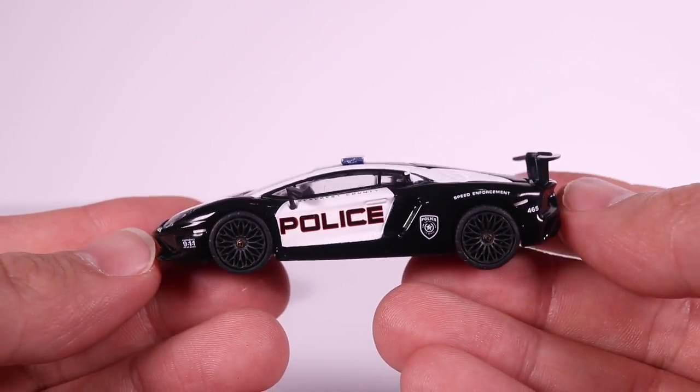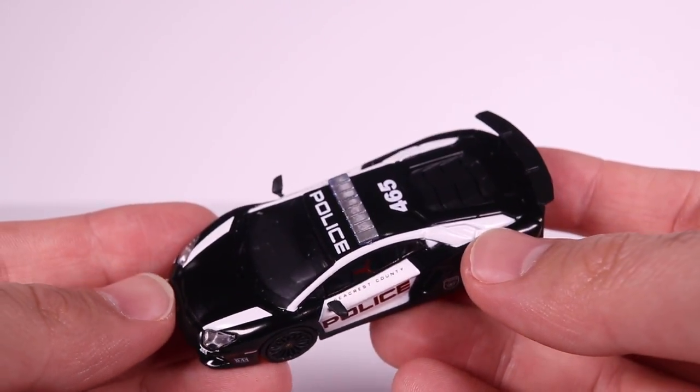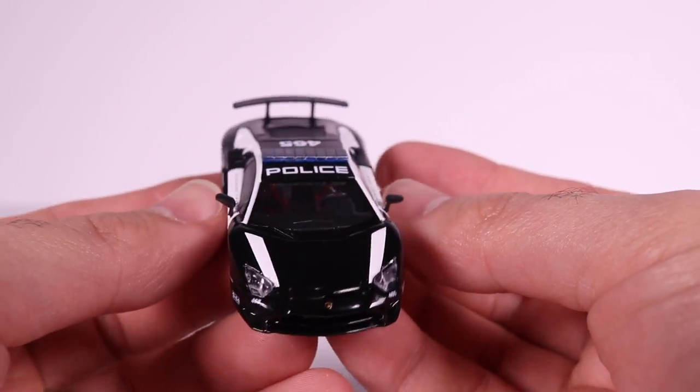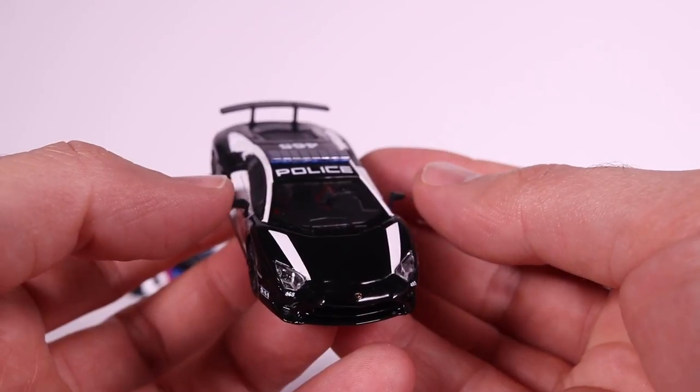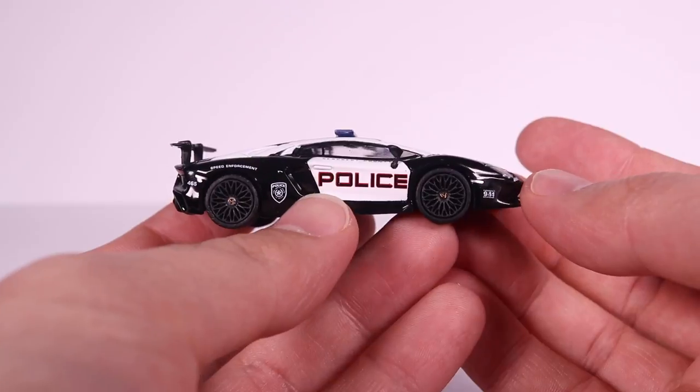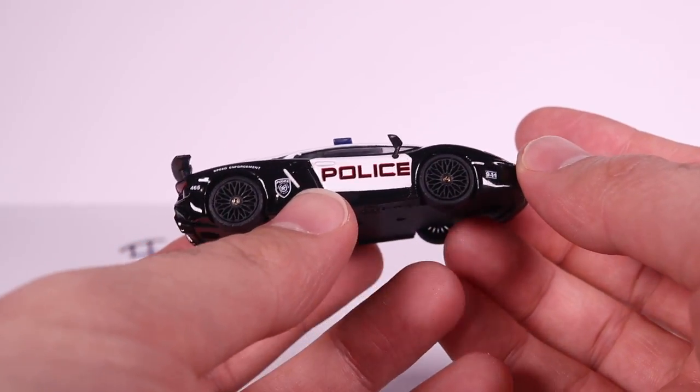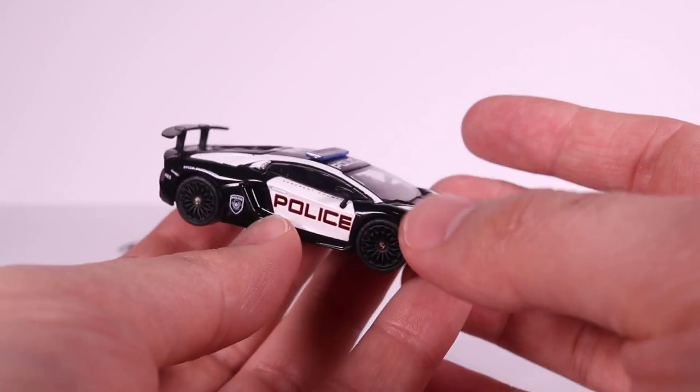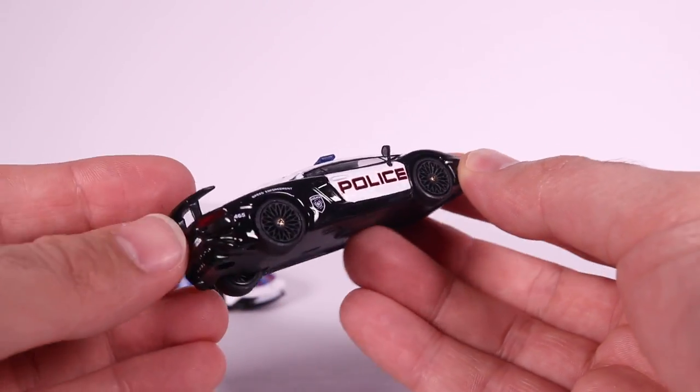And there it is, Police Aventador SV. Check it out, black with the white on it. And again, the side mirrors are these kind of stuck on, like rubberish plastic, but wow. That is one of the best looking 1:64 scale police cars I think I ever have seen. It has to be. That is awesome, the Aventador SV.